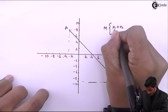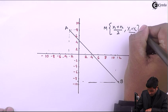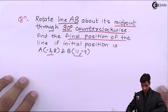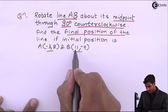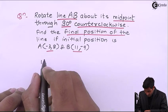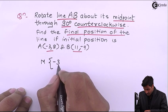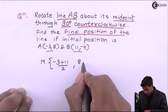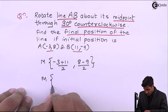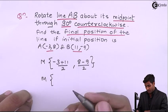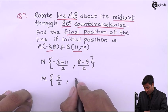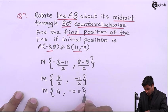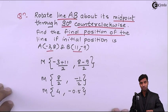Calculating midpoint M: x-coordinate = (x1 + x2) / 2 = (-3 + 11) / 2 = 8/2 = 4. Y-coordinate = (y1 + y2) / 2 = (8 + (-9)) / 2 = -1/2 = -0.5. So the midpoint M is (4, -0.5).